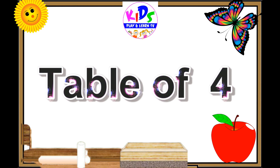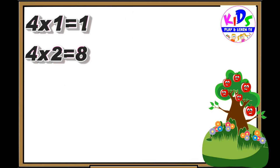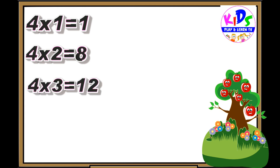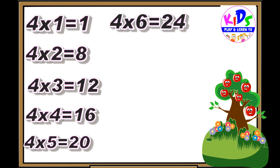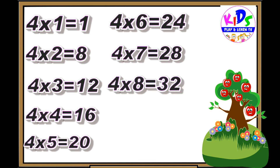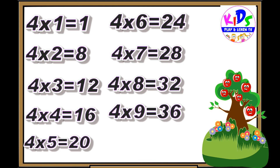Hey kids, let's repeat. 4 1s are 4, 4 2s are 8, 4 3s are 12, 4 4s are 16, 4 5s are 20, 4 6s are 24, 4 7s are 28, 4 8s are 32, 4 9s are 36, 4 10s are 40.